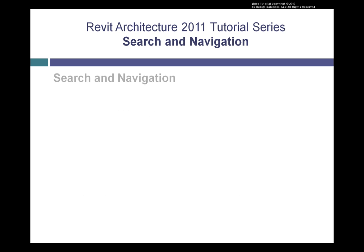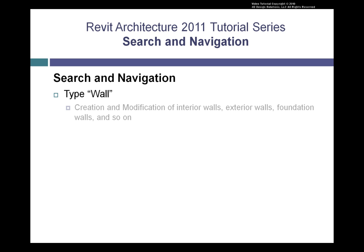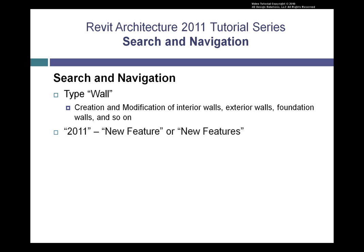We've added additional searching capabilities with our keyword search. For example, if you type the word "wall," the search results will show you all of the lessons related to creating and modifying interior walls, exterior walls, foundation walls, and so on. And for those of you coming from previous versions of Revit Architecture who just want to learn about the new features in this release, by searching for "2011," "new feature," or "new features," you'll be directed to a list of lessons illustrating just the new functions and features added to Revit Architecture 2011.